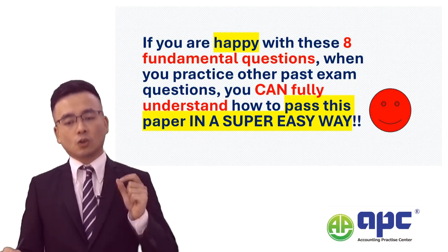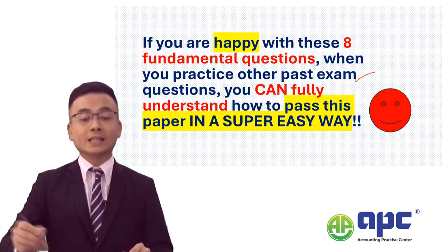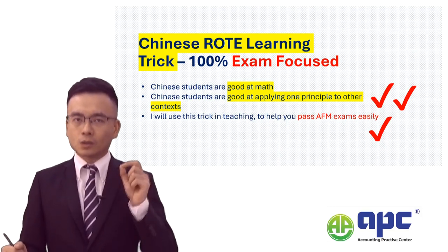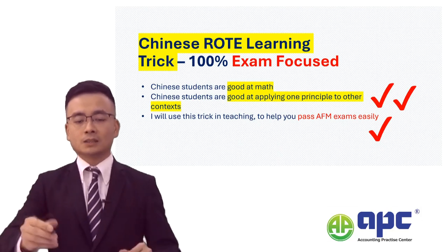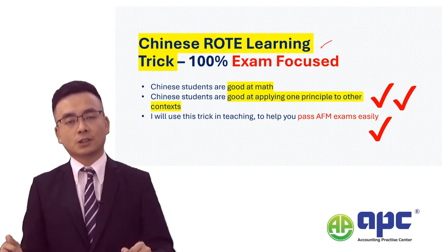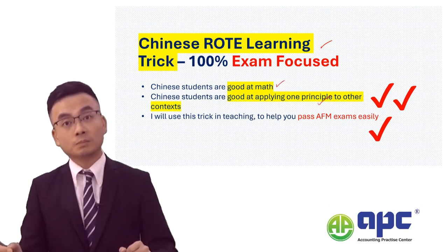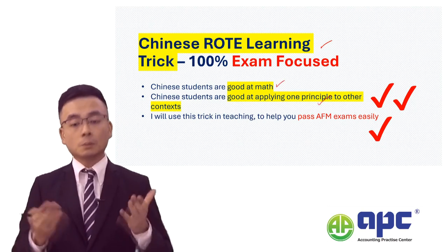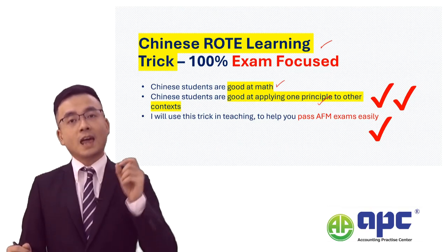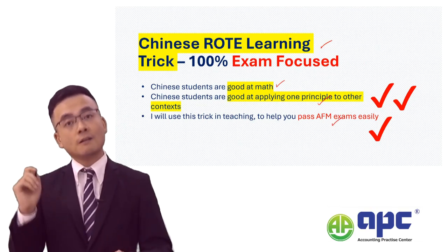If you are happy with these questions, when you practise the past exam or even the actual exam, you can fully understand how to pass this paper in a super easy way. I would like to reveal a secret — this is what I mean by the Chinese rote learning trick. It's 100% exam focused. Chinese students are quite good at maths and applying one principle to other contexts because they are very good at summarising things. I will use this trick in my teaching to help you pass this paper fairly easily.